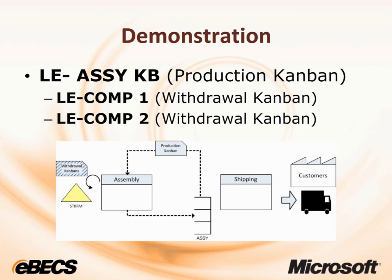In our demonstration today, we're going to be building LE Assembly Kanban using a production Kanban. LE Assembly Kanban is composed of LE Component 1 and LE Component 2, which will both be pulled to the line side using a withdrawal Kanban. Basically what we're doing is loading the assembly work cell using a production Kanban. This is going to be a three-bin system, so as shipping and the customer pulls out of our buffer stock and finished goods, we're going to load the work cell assembly to produce and replenish that signal. We're going to be pulling the components from the stock room to the line side, right by the assembly work cell, using a withdrawal Kanban.